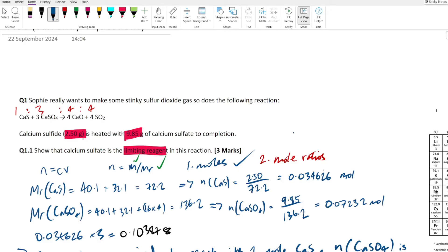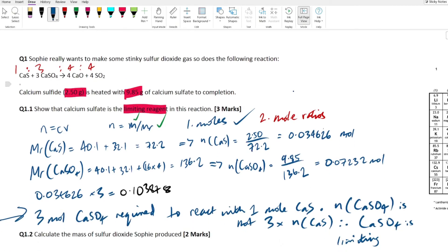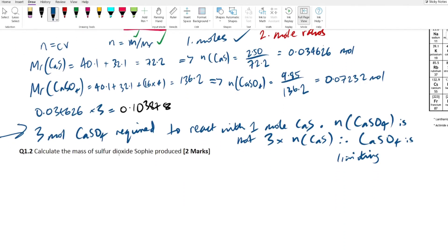So what we have to do is we just have to use the mole ratios and sort of back engineer this question. So we look at the mole ratios. Remember I said that it carries across the whole equation. So this one to three mole ratio for the calcium sulfide and calcium sulfate also applies to the product side. However, you have to use the moles of the limiting reagent, because that limits the amount of product that is produced.